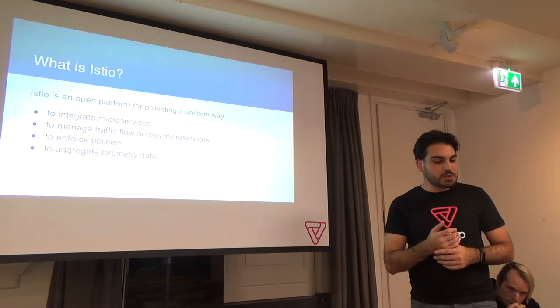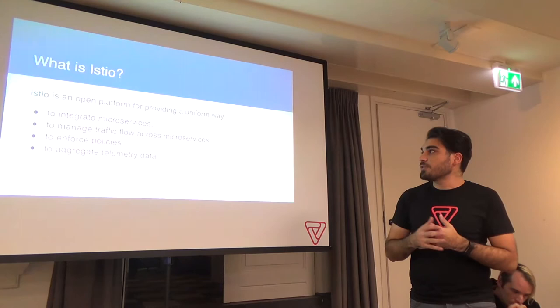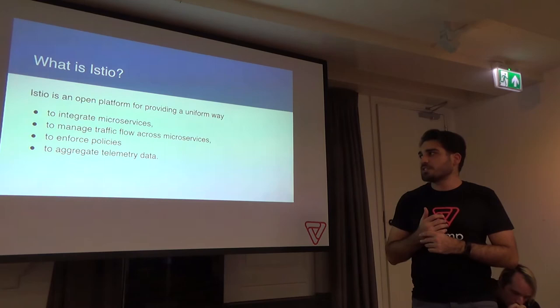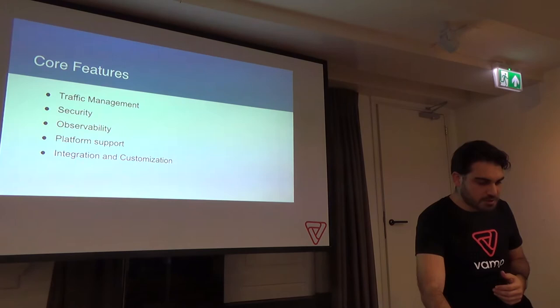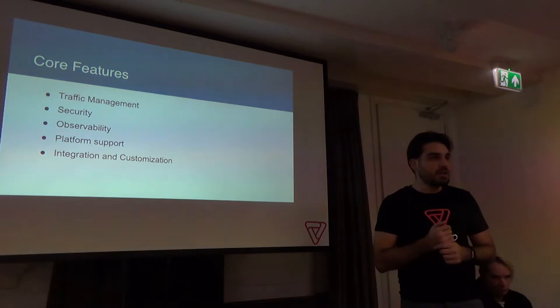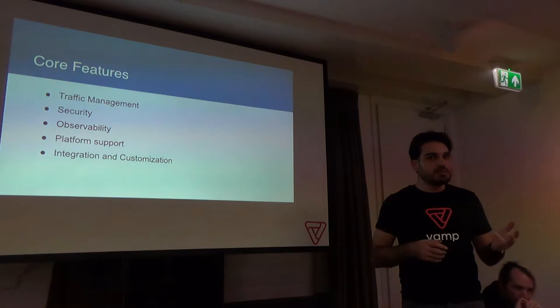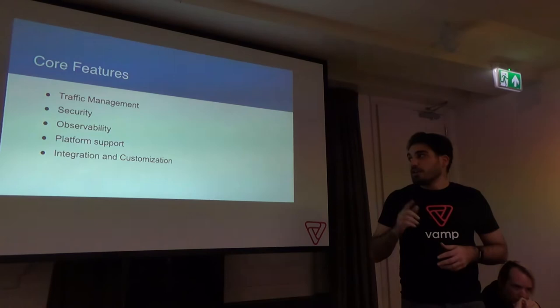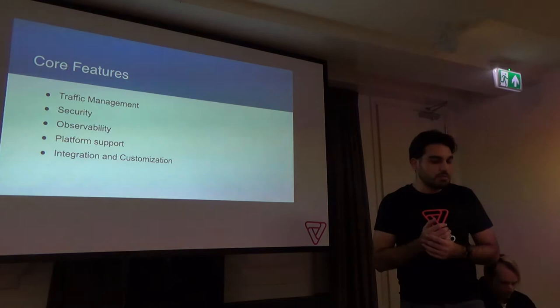Istio is a uniform way to integrate microservices, manage traffic flow across microservices, enforce policies, and aggregate telemetry data. Its core features are traffic management, security, observability, platform support, integration, and customization. Istio can be deployed on VMs, bare metal, and Nomad, but we are going to talk mostly about Kubernetes support, which is their main goal.